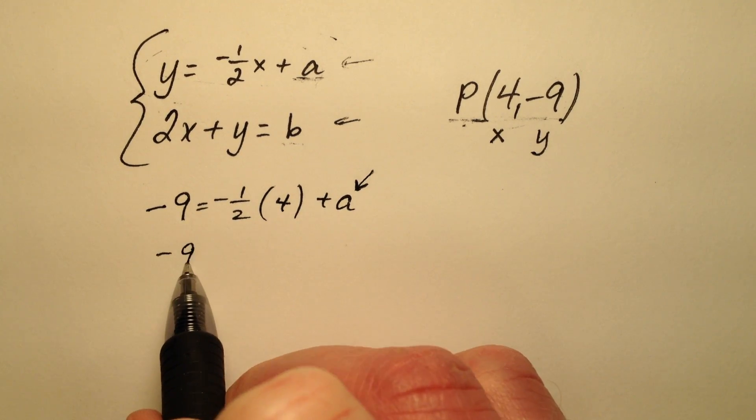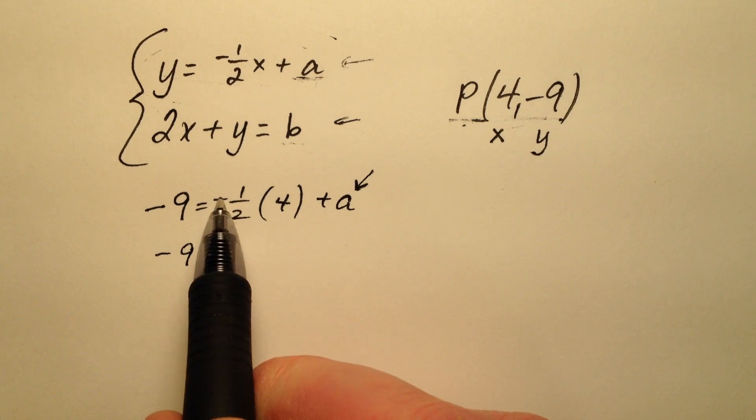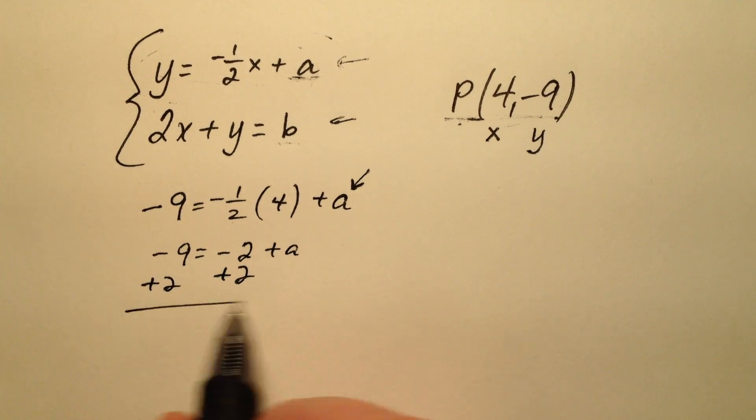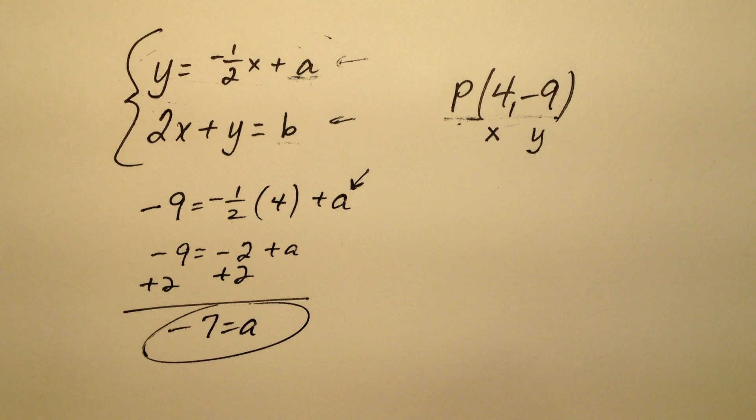So negative 9 equals, well 1 half of 4 is 2 but it's negative so negative 2. I'm going to add 2 to both sides and I get negative 7 equals a. So my value for a is going to be negative 7.